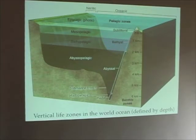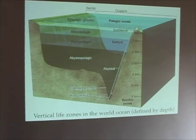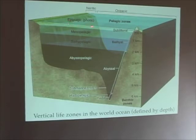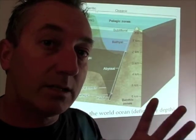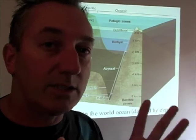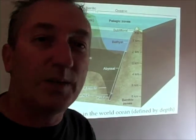These life zones are defined by depth, ranging from the very surface of the ocean to the deepest parts of a submarine trench. At the very surface, we have the epipelagic zone, also known as the photic zone — the depth of light penetration defines it. Below that is the mesopelagic, sometimes called the twilight zone, because it has that sort of dusk-like darkness to it.